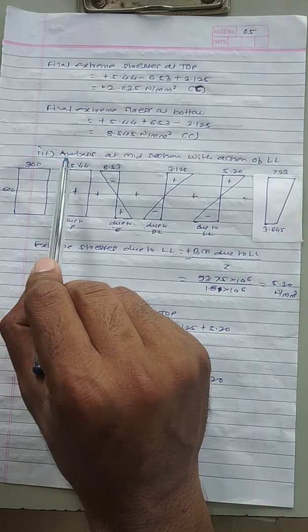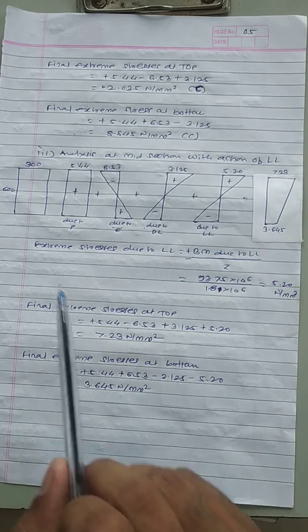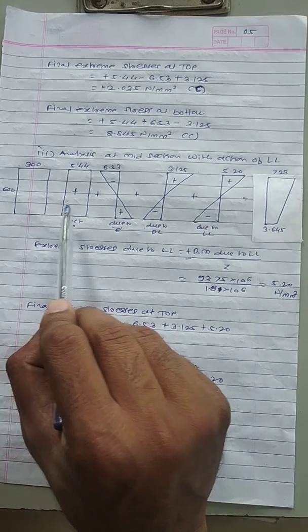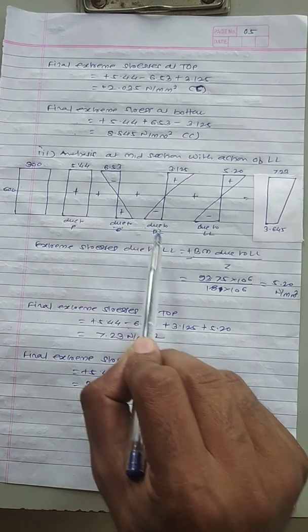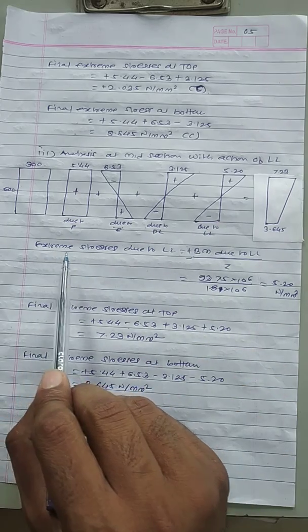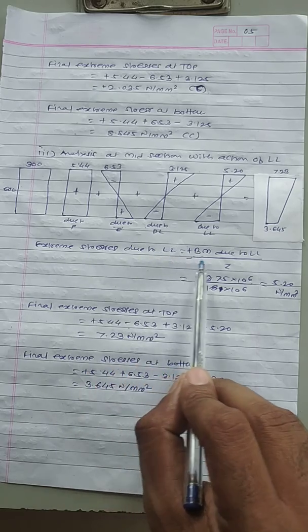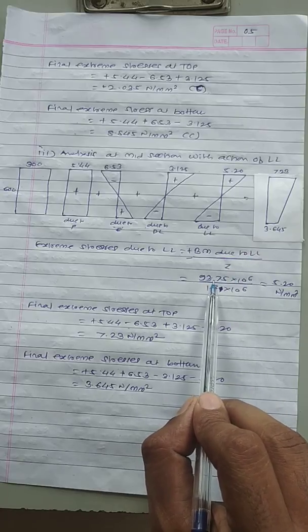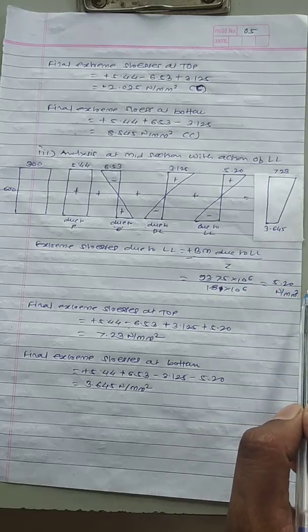Analysis at the midsection with live load: in addition to dead load, we now include live load. The extreme stresses due to live load = ML/Z = (93.75 × 10⁶) / (18 × 10⁶) = 5.20 N/mm². The stress diagram now includes four components: direct stress, eccentricity stress, dead load stress, and live load stress.